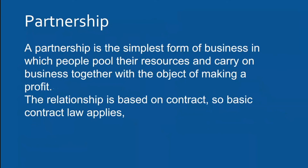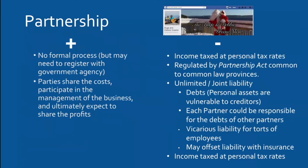The partnership has advantages — no formal process needed, you can share costs, participate in management, and share profits. Three heads are better than one, and it shares the workload. However, like a sole proprietorship, profits are taxed at the personal rate. For example, if the business makes $300,000 and there are three equal partners, each receives $100,000, which appears on their personal tax form and is taxed accordingly.